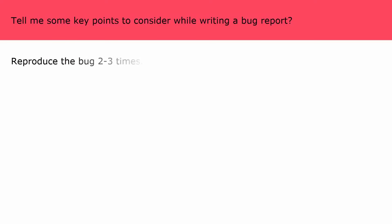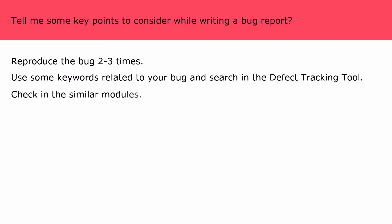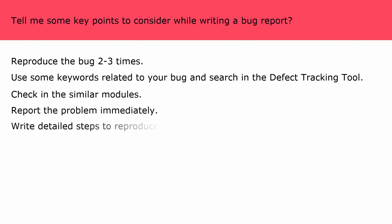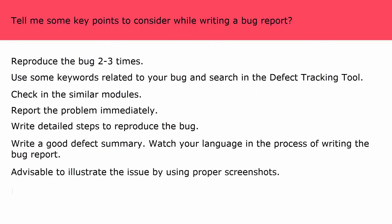Key points to consider while writing a bug report: reproduce the bug two to three times; use keywords related to the bug and search in the defect tracking tool; check in similar modules; report the problem immediately; write detailed steps to reproduce the bug; write a good defect summary; watch your language — your words should not offend people; never use capital letters when explaining the issue; illustrate the issue using proper screenshots; and proofread your bug report twice or thrice before posting it.